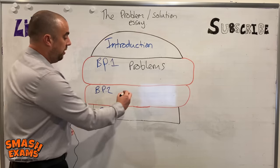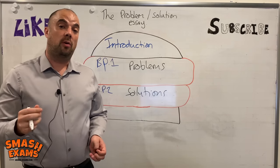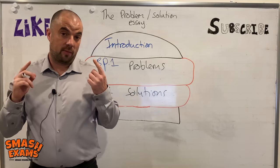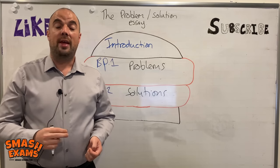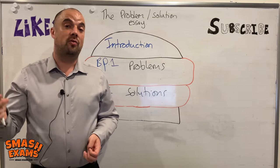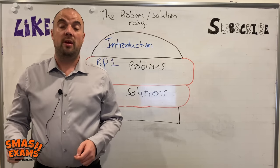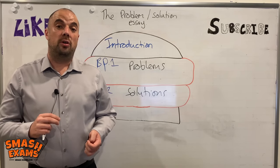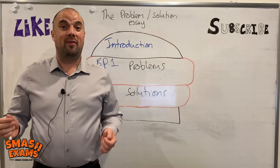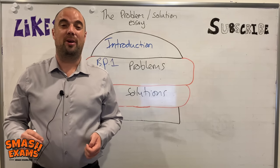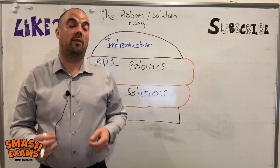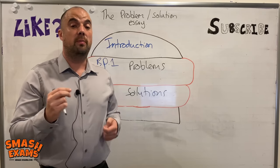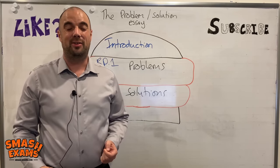The second body paragraph is obviously the solutions. The question asks what governments can do to reduce unemployment. Think of ideas in your plan: they could offer free training to people who don't have jobs, create government jobs, or put a limit on how many robots are allowed into the workplace. In the conclusion you should summarize your main solutions and maybe offer some benefits of implementing those solutions.